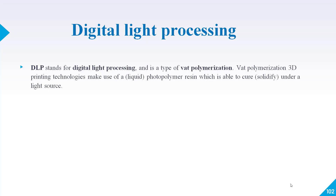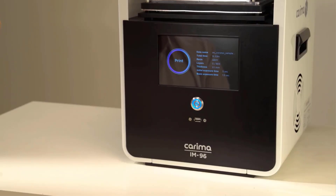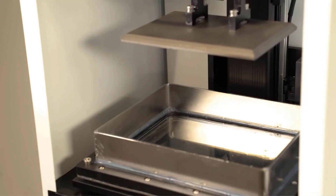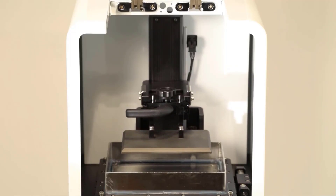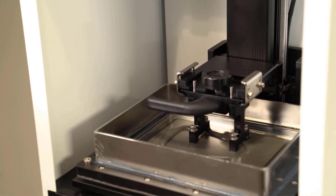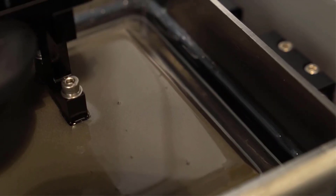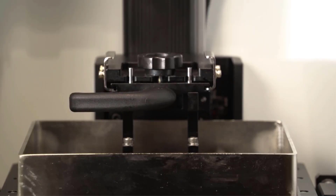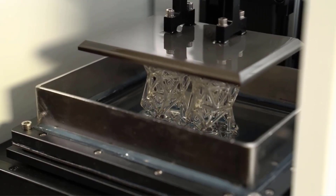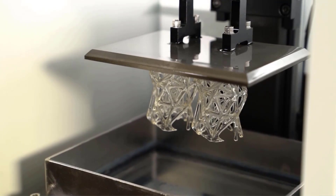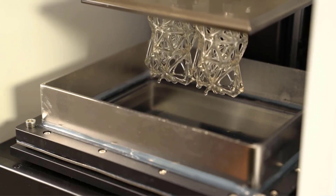The liquid resin is able to cure and solidify under a light source. As we have discussed about SLA, stereolithography type of 3D printing also uses a liquid resin where laser contact causes the resin to solidify. DLP is similar to SLA — both technologies are based on the same fundamentals where they use liquid resin and a light source to solidify it into a layer.